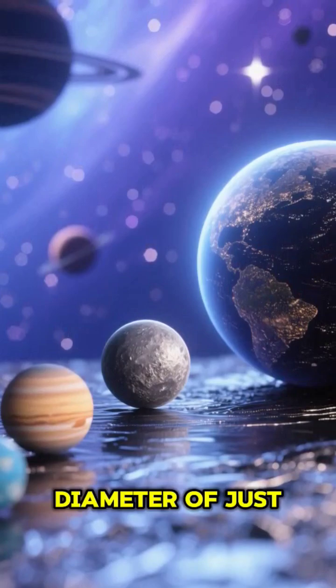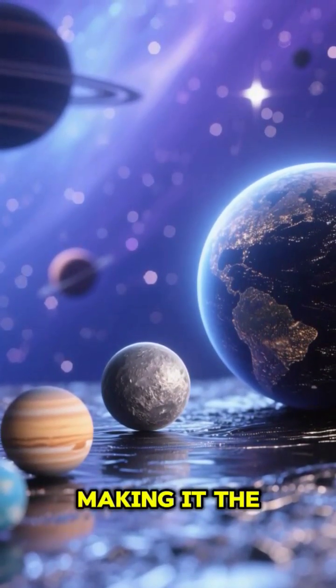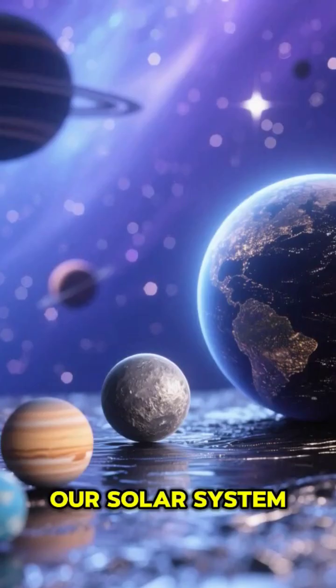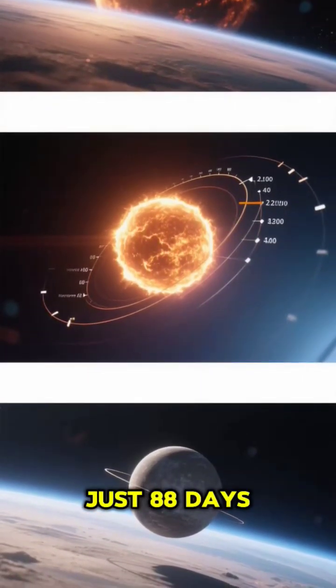Mercury has a diameter of just 4,879 kilometers, making it the smallest planet in our solar system. It has no moons and completes an orbit around the Sun in just 88 days.